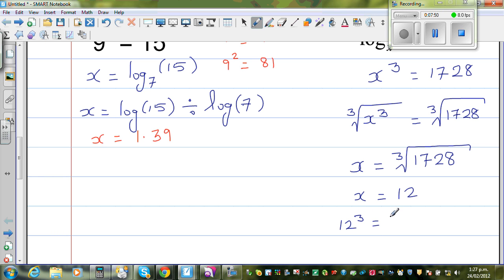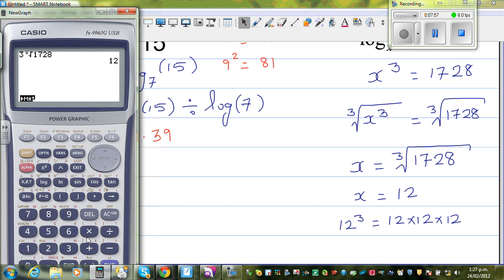Using the calculator's cube root function, we get x equals 12, which means 12 times 12 times 12 is 1728.